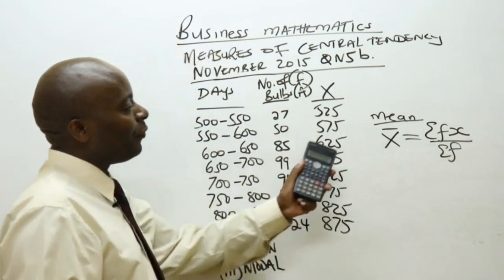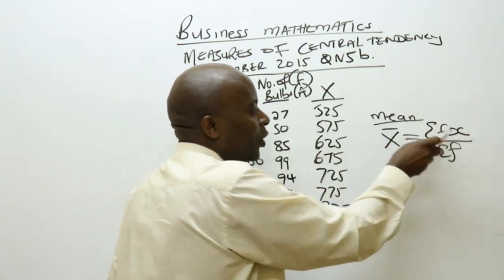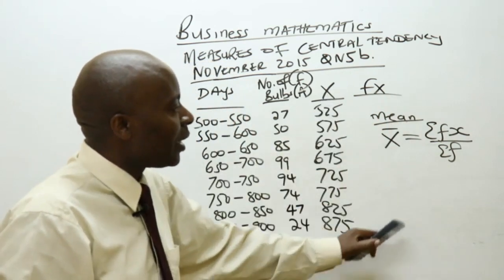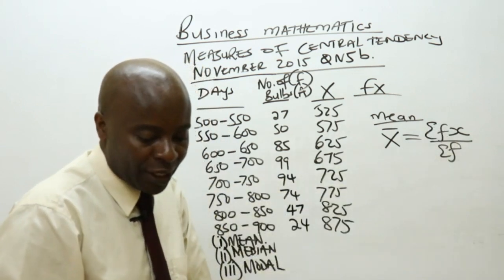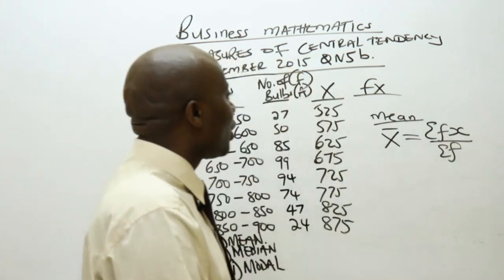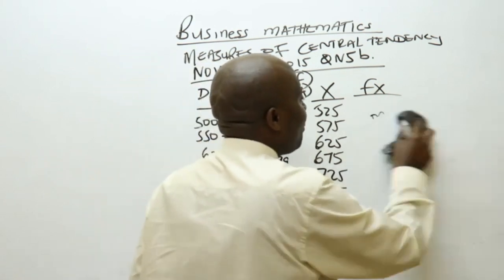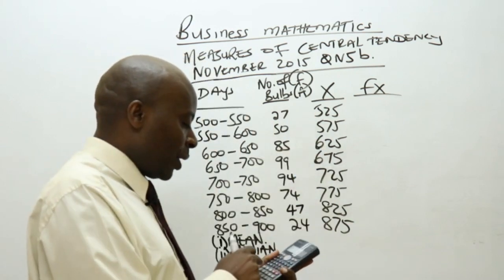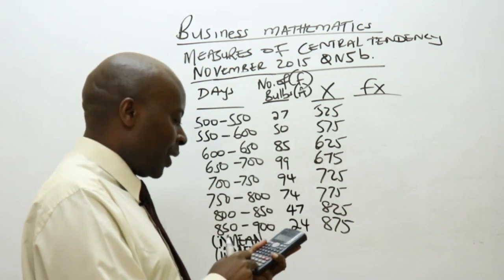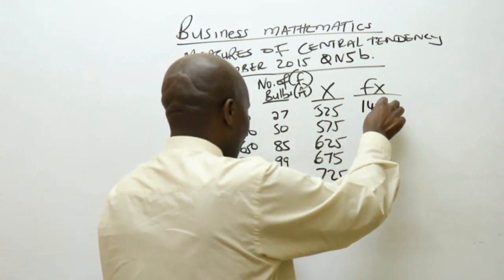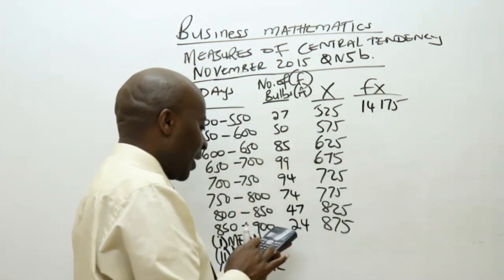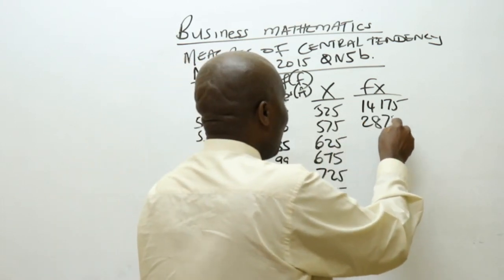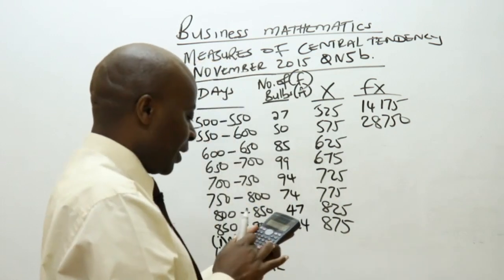As per the formula, we need to create a column of fx. There's a multiplication here — we multiply f by x. The number of values will be our frequency. So fx: 27 times 525 gives me 14,175. Then 50 times 575, which gives us 28,750. Then 85 times 625, which gives us 53,125.